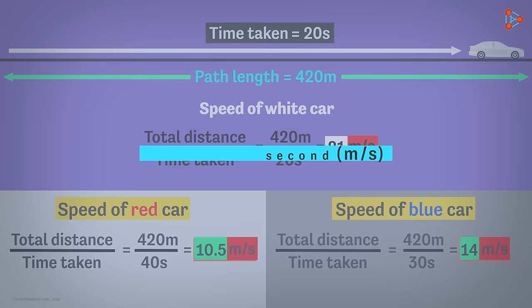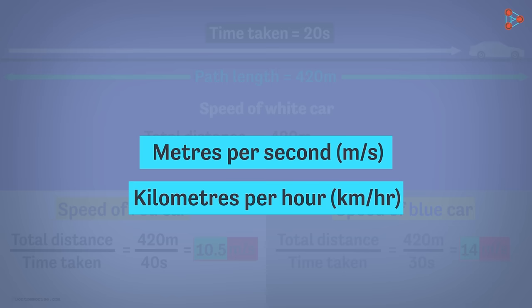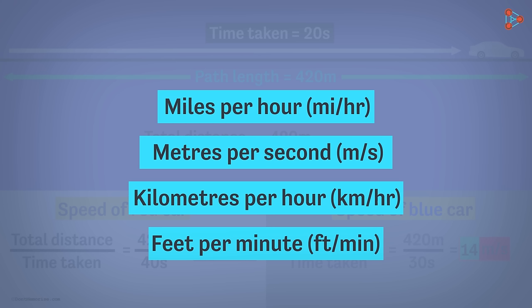Now I want you to look at the units. Meters per second is one of the units of speed. There are many such units of speed that you must be aware of. For example, kilometers per hour, miles per hour, feet per minute and so on. We will discuss more about these units in our future videos.